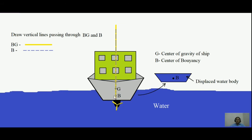Now, draw two vertical lines: one passing through B and G — the yellow line passing through BG — and one vertical line through B itself, where B is the center of buoyancy. Right now they are coinciding with each other. The dashed blue line is a vertical line passing through B and the thick yellow line is passing through BG. G is the center of gravity and B is the center of buoyancy.